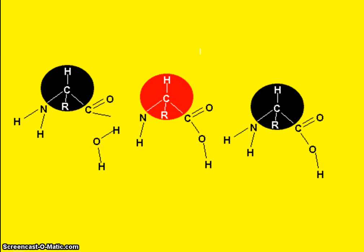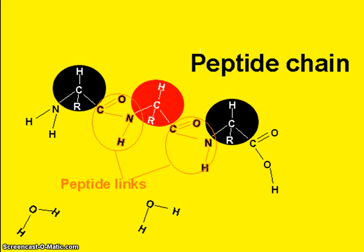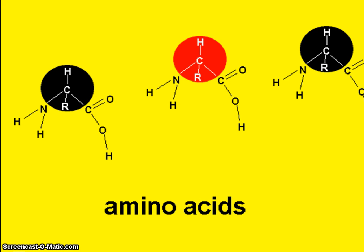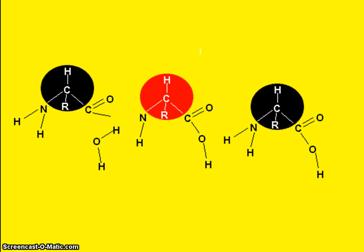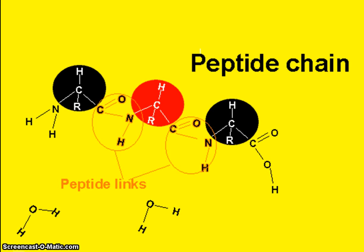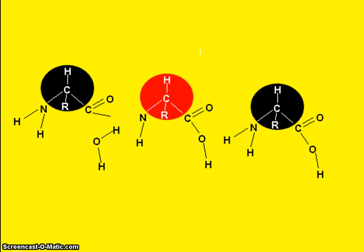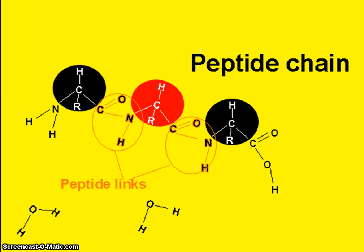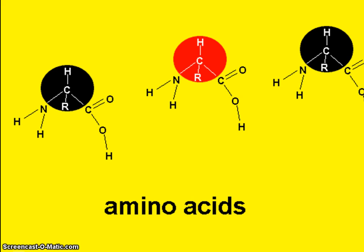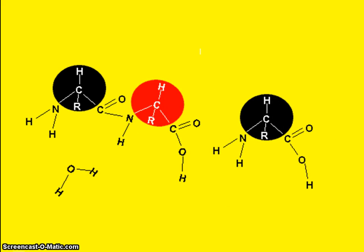This is a Queen Mary's College video on the production of the primary protein structure, otherwise known as protein synthesis. We're going to be looking at how the amino acid chain is produced in terms of putting the amino acids in the correct order. As you can see from the animation, they're linked together by the condensation reaction to produce the polypeptide chain, or the primary structure.